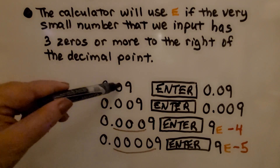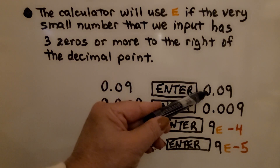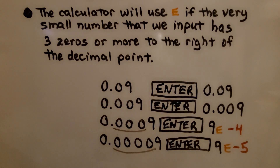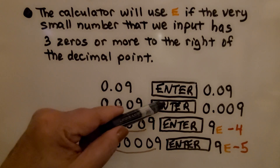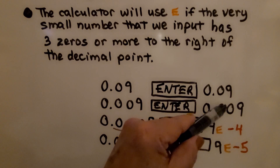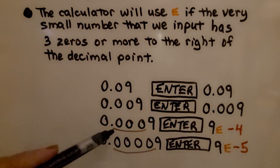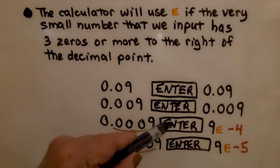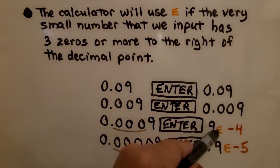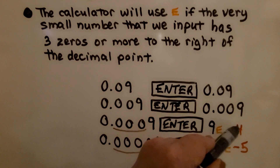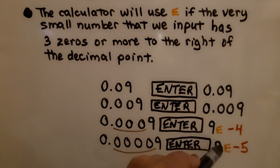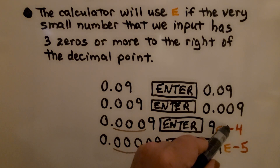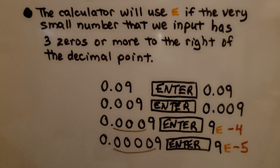If we put in 0.09 and hit enter, the calculator will just show 0.09. And if we put in 0.009 — two zeros to the right of the decimal point — we'll see the same thing. As soon as we put in three zeros and then a digit and hit enter, we'll see that digit with a capital E and a minus 4. And with four zeros then a digit, we'll see that digit with a capital E and minus 5. This means 9 times 10 to the negative 4th power, and 9 times 10 to the negative 5th power.